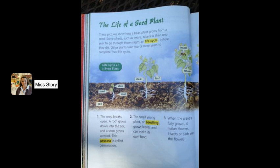The Life Cycle of a Seed Plant. These pictures show how a bean plant grows from a seed. Some plants, such as beans, take less than one year to go through these stages or life cycle before they die.